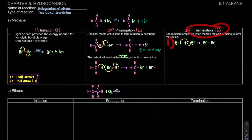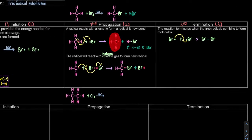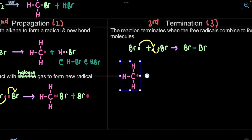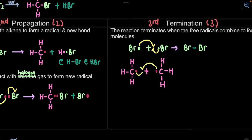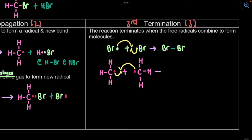Termination has three steps. The first one is Br + Br. The second one: the carbon radical from propagation step one - the CH3 radical - combines with another CH3 radical. Show the dot next to the plus sign so it's easier to combine. Show the dating spot - make sure the arrows are meeting near the plus sign. The product is CH3-CH3 (ethane).